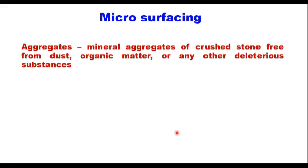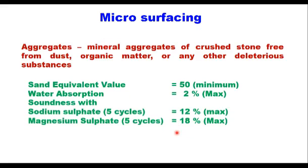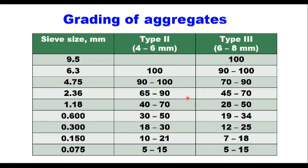The mineral aggregates or crushed stone used must be free from dust, organic matter, or any other deleterious substances. The sand equivalent value should be minimum 50, water absorption not more than 2%, and soundness loss with sodium sulfate solution after 5 cycles not more than 12%, and with magnesium sulfate not more than 18%. For Type 2 microsurfacing the nominal aggregate size is 4.75 mm, and for Type 3 it is 6.3 mm; both should be well-graded aggregates.